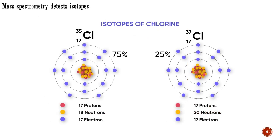Most elements can exist as more than one isotope. Usually one isotope accounts for the vast majority, perhaps more than 99%, of the atoms of an element. But for some elements, atoms of several isotopes make up a significant proportion of the total in a sample. Chlorine, for example, is normally a 3-to-1 mixture of chlorine-35 and chlorine-37, hence the average relative atomic mass of chlorine is 35.5.